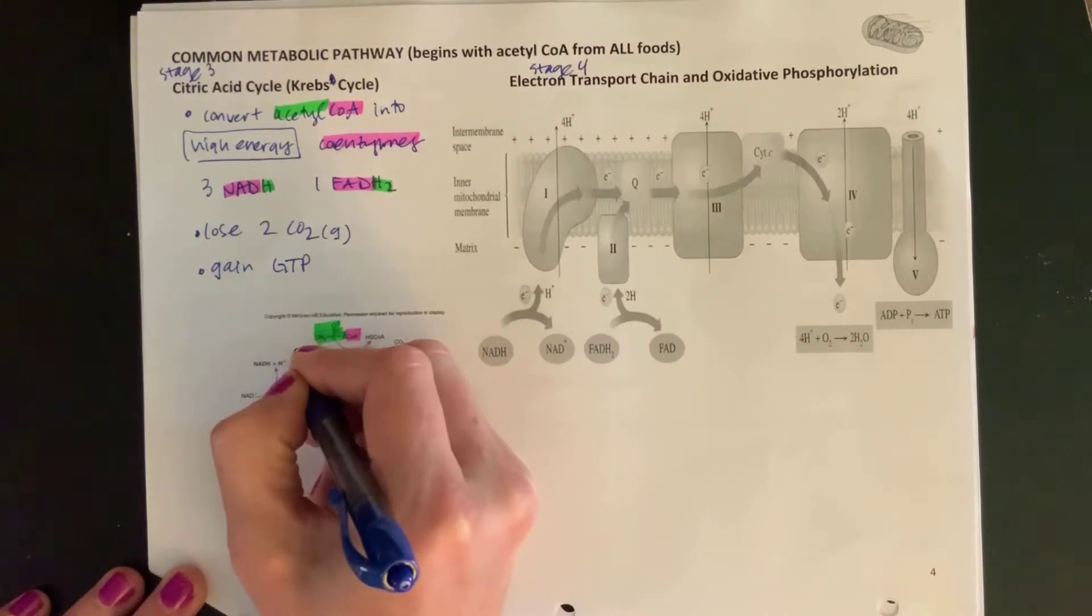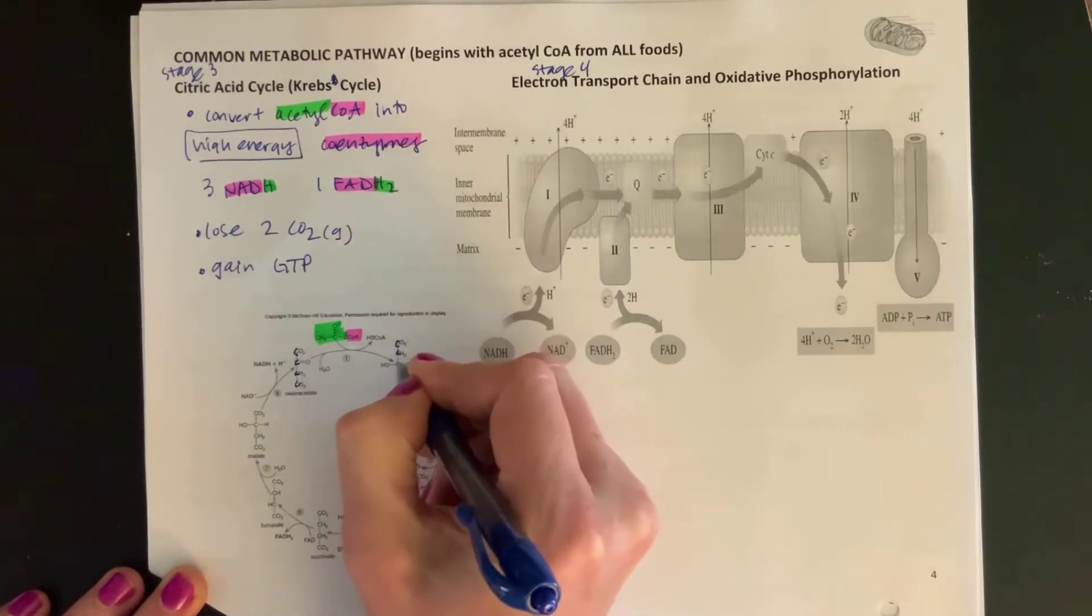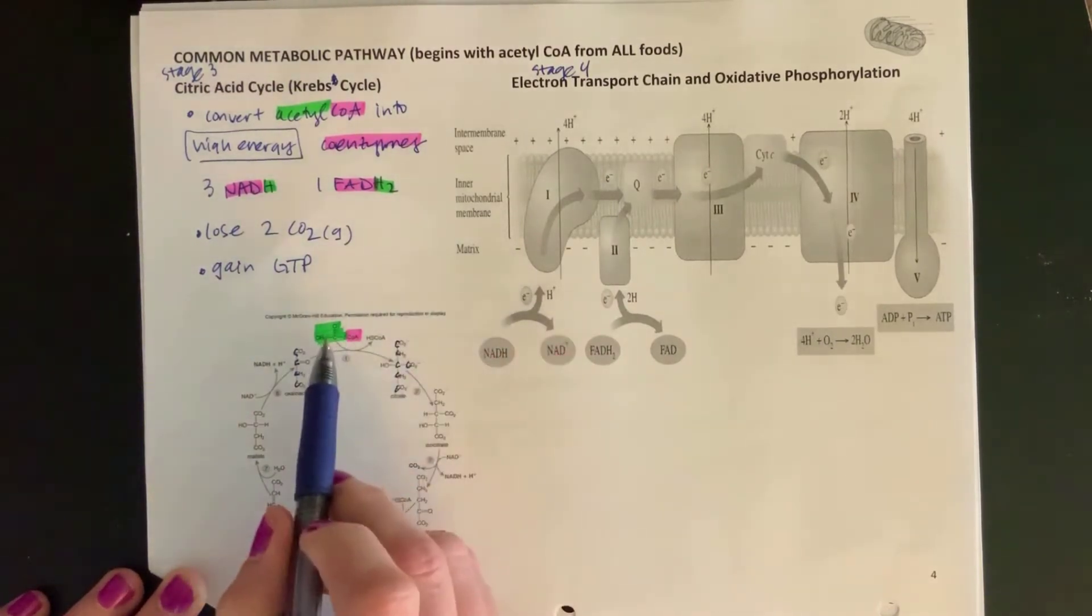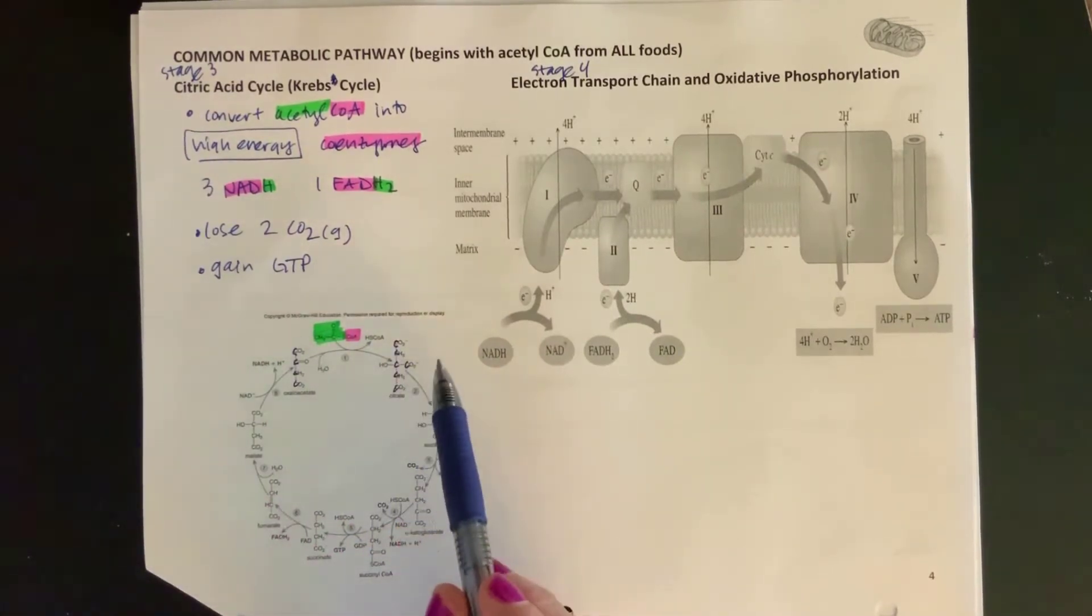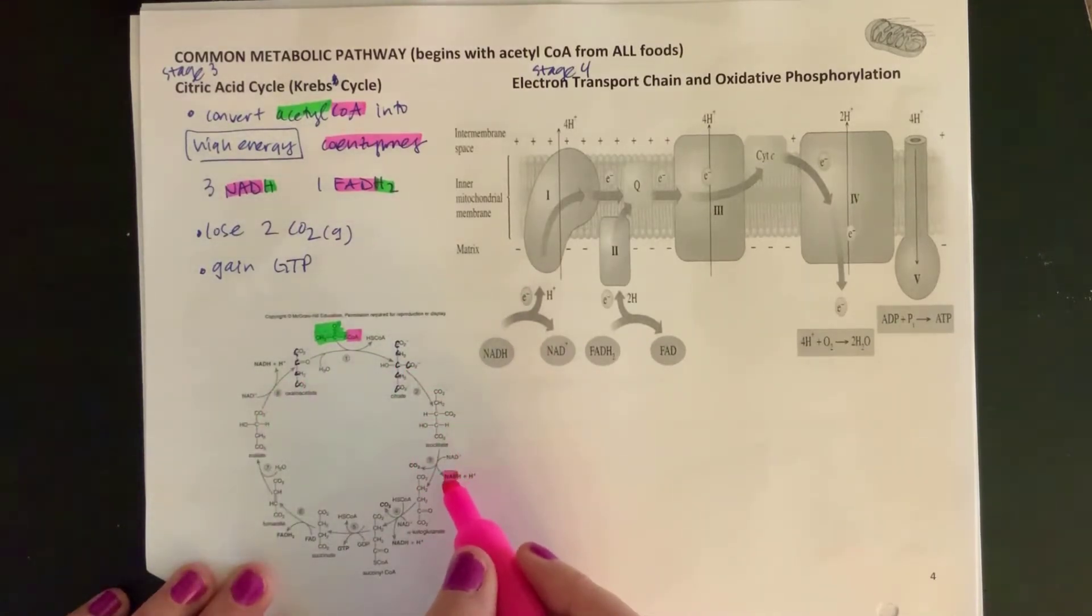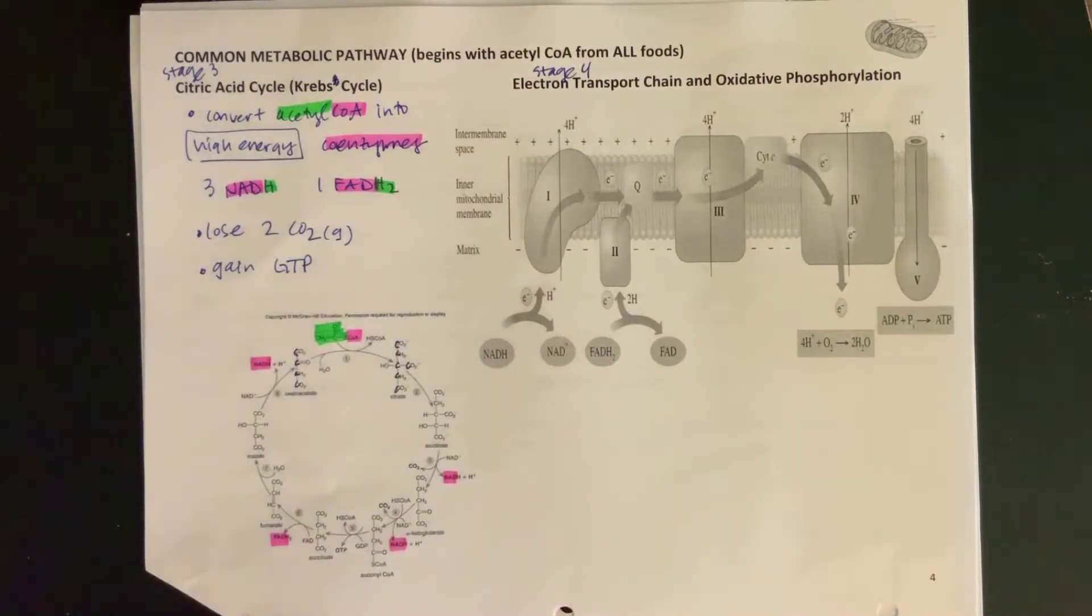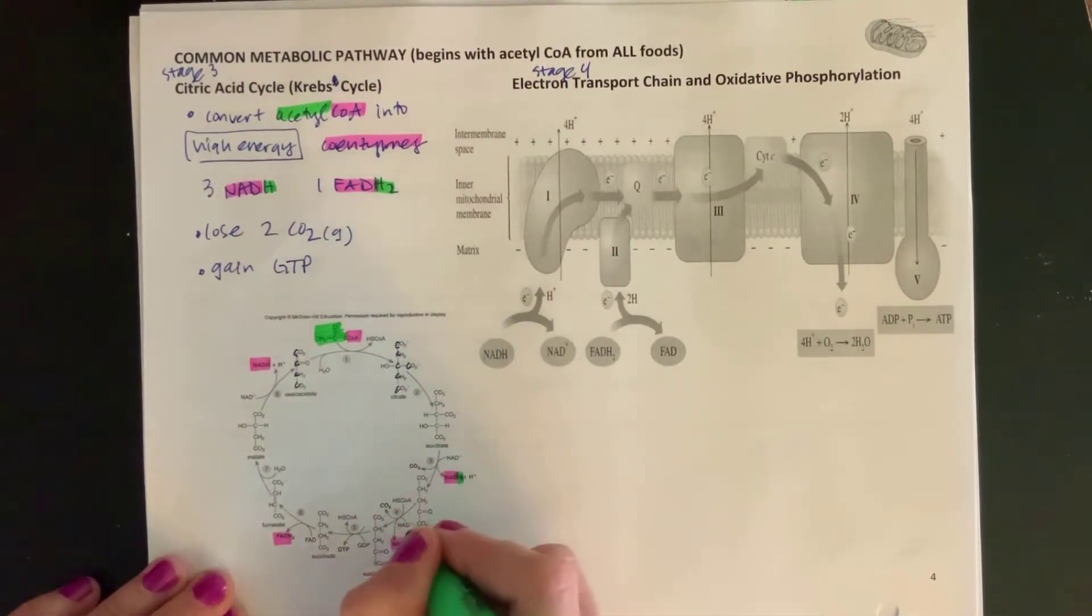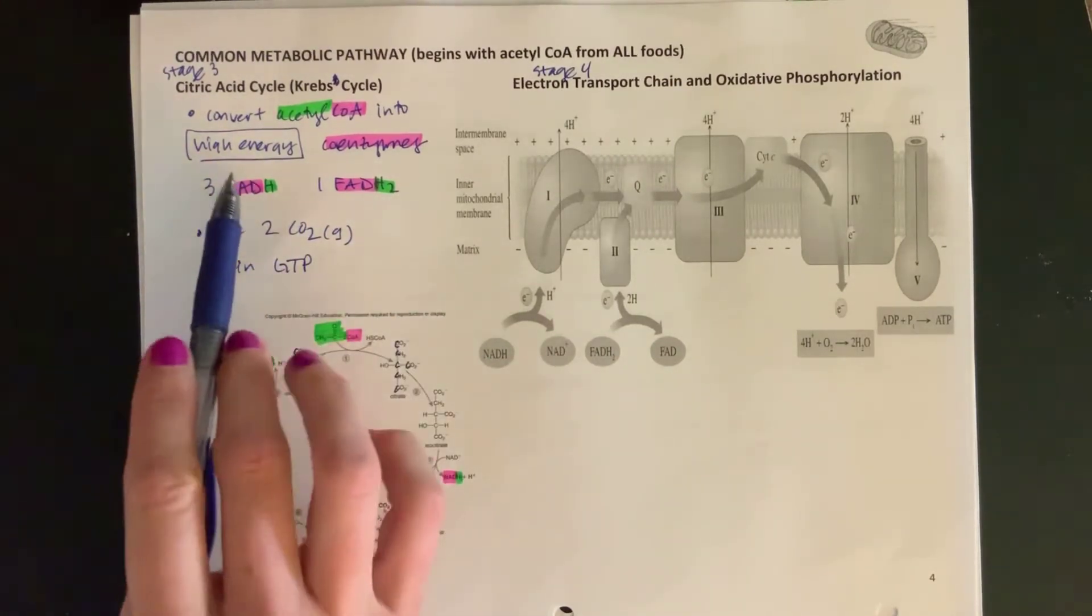In this citric acid cycle, you can see we have two carbons and they come in and join onto this four-carbon oxaloacetate. Once I add those two carbons, I now have six carbons. So I go from four carbons, grab those extra two, and now I have six. As I work around the circle here, you can see at step three I produce an NADH, step four I produce an NADH, step six I produce an FADH2, and step eight I produce an NADH. If you want to, you can keep that little reminder that these are high energy—they have those H's on them. So those are the key products that we talked about.